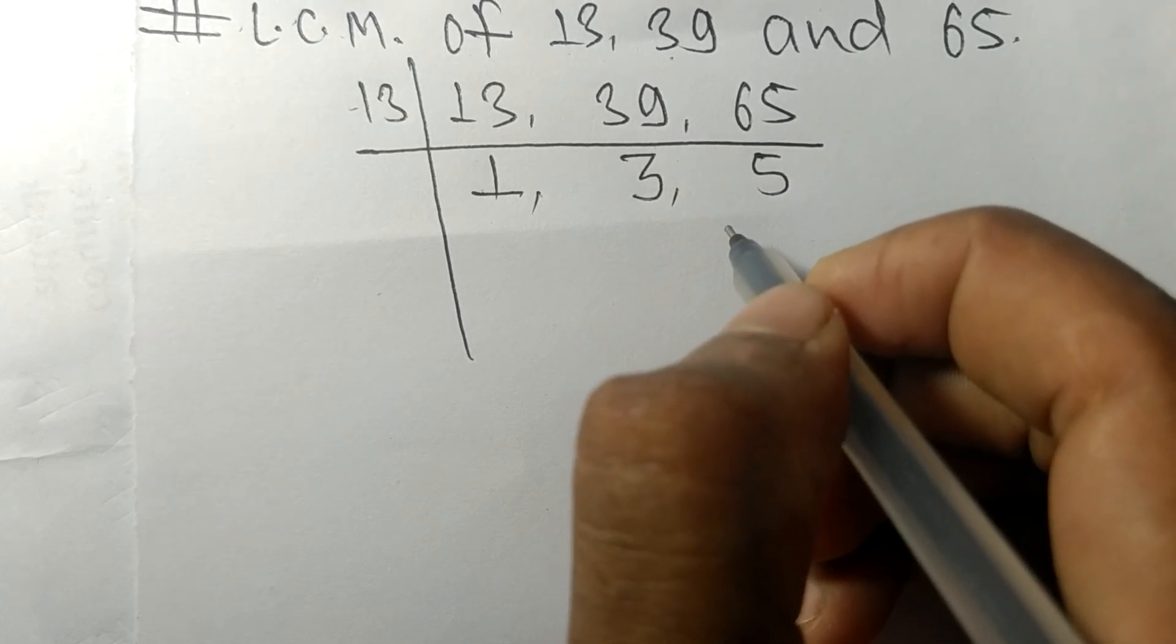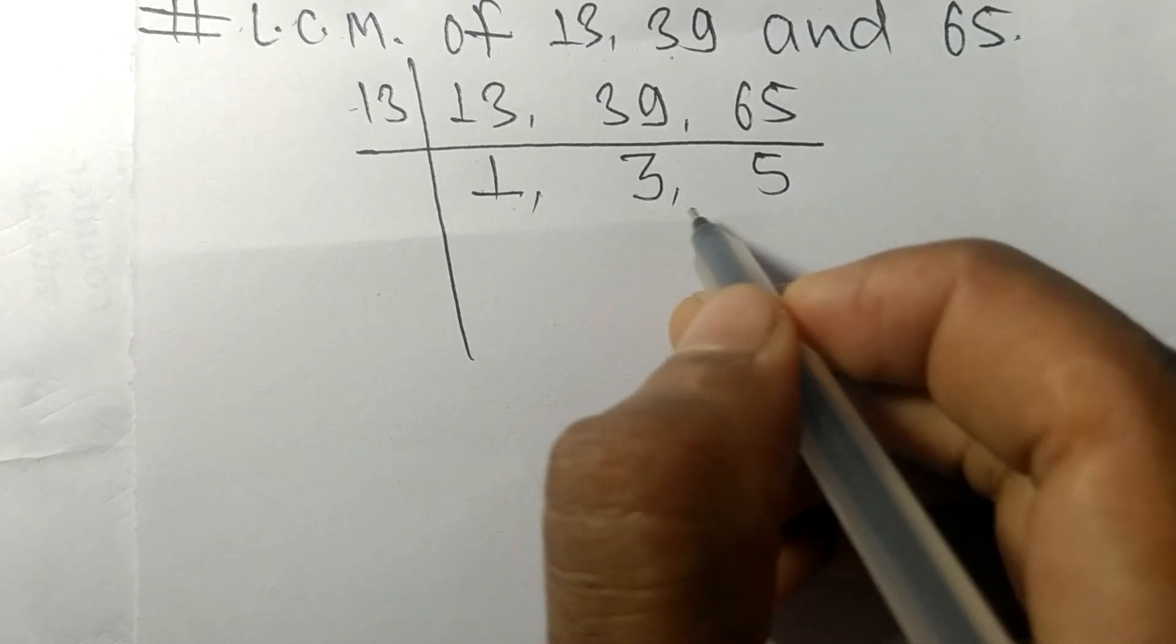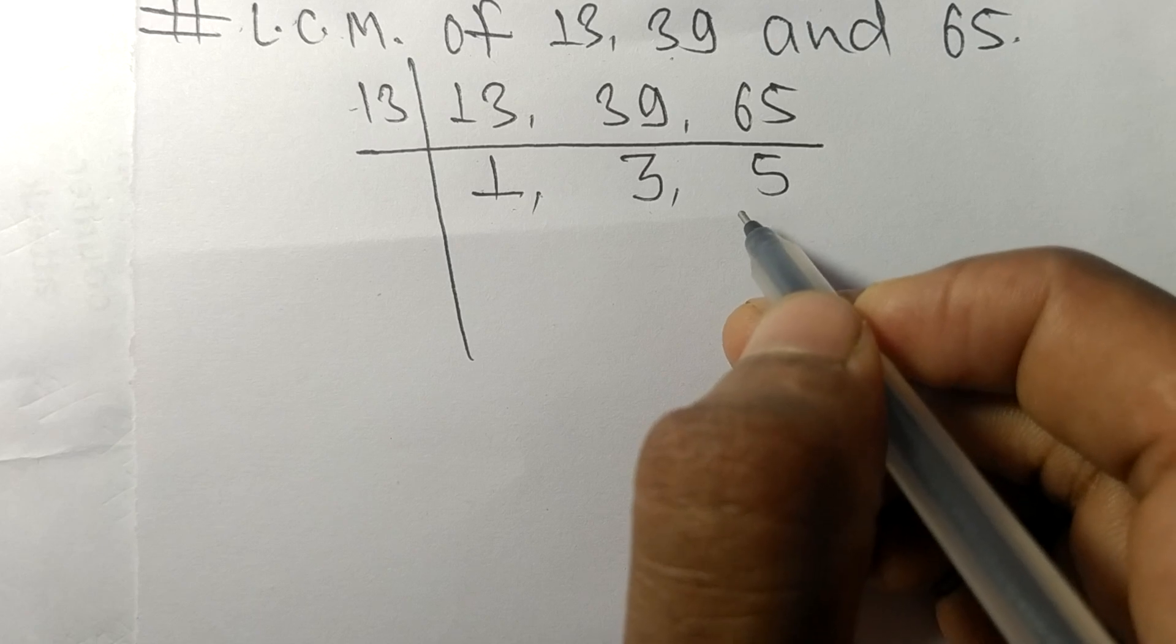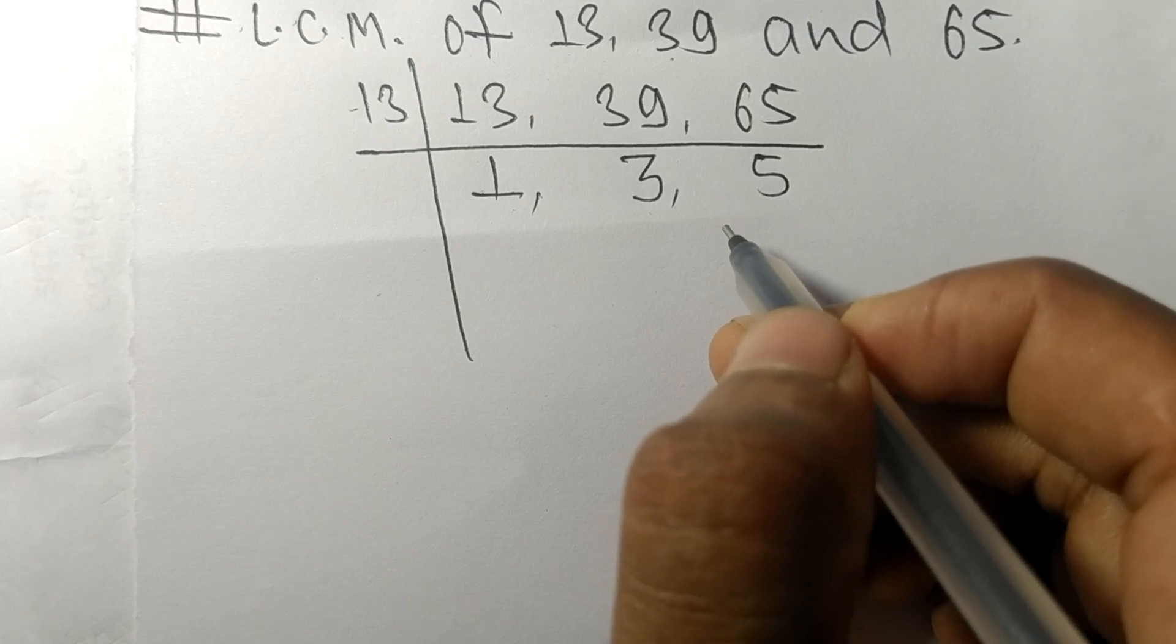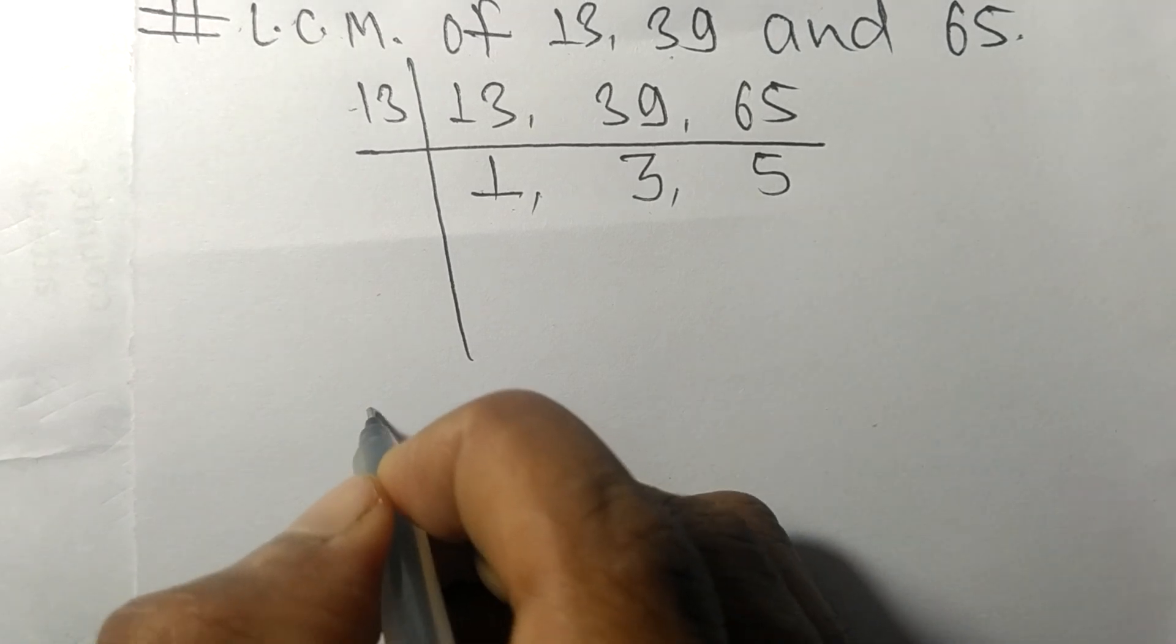So now we got 1, 3, and 5, which are not exactly divisible by the same number.